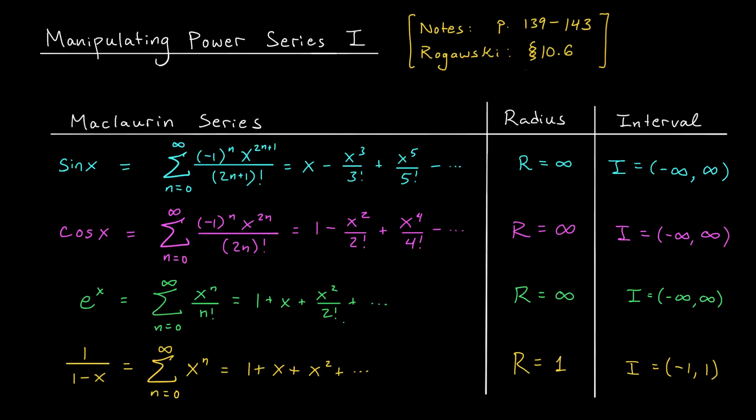Hi everyone, and welcome back. In our last lesson, we learned how to determine where a power series converges. Specifically, we saw that the ratio test can be used to find the radius of convergence of the series. That gives us an interval of values around the center x-naught where the series will definitely converge. We then have to check the endpoints of that interval using other methods, and include them or not based on our findings. The end result is what we call the interval of convergence. Now, this process has important implications when it comes to Taylor and Maclaurin series.